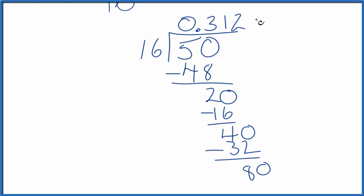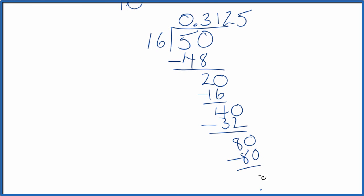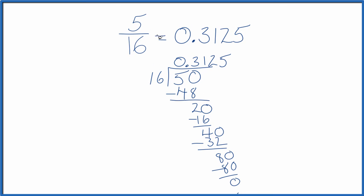Call it 80. 16, 5 times 16, that equals 80, and we're done. The fraction 5/16th is equal to 0.3125, the decimal. So either way, if you do it on a calculator or you do it longhand, 5/16th equals 0.3125.